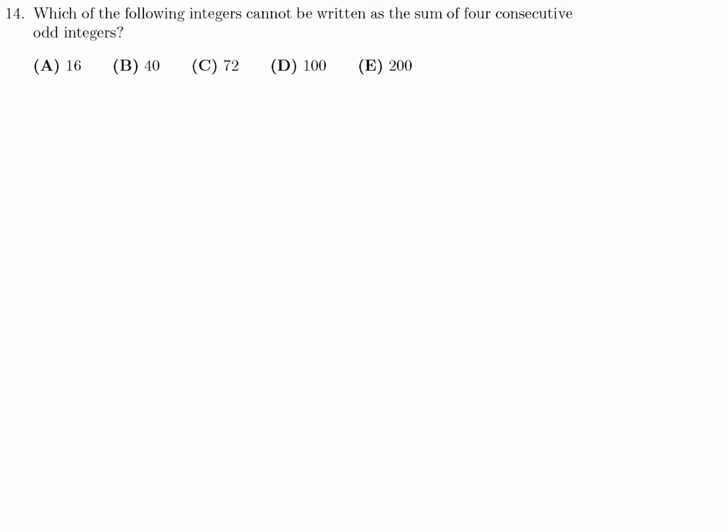Which of the following integers cannot be written as the sum of four consecutive odd integers? Well, four consecutive odd integers. So 2n plus 1, 2n plus 3, 2n plus 5, 2n plus 7. That meets the criteria of four consecutive odd integers.